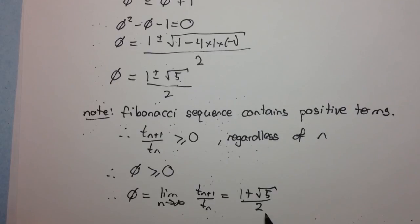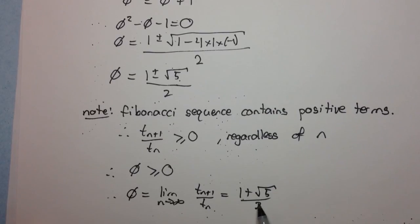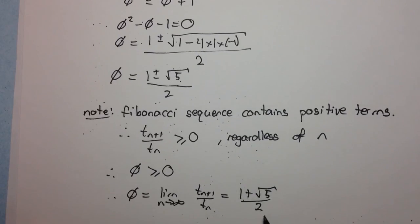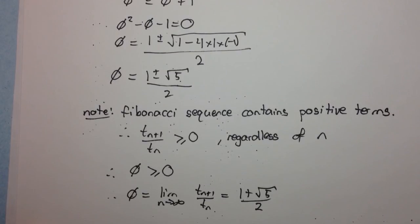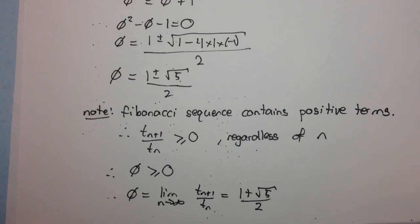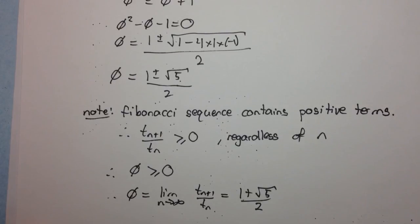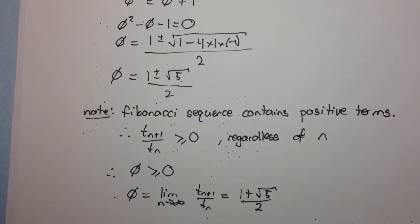A quick note: this number is actually known as the golden ratio. And that's one of the amazing properties of the Fibonacci sequence — that as n becomes increasingly large, the ratio of a term to the previous term is, in fact, the golden ratio. I hope you enjoyed this video.